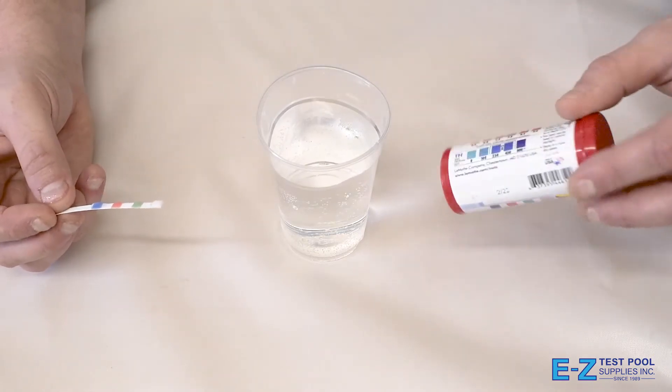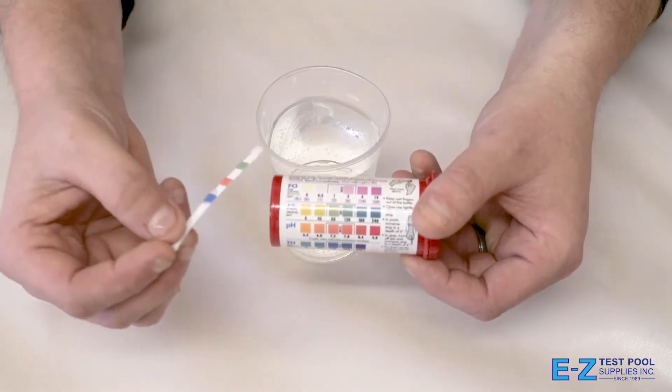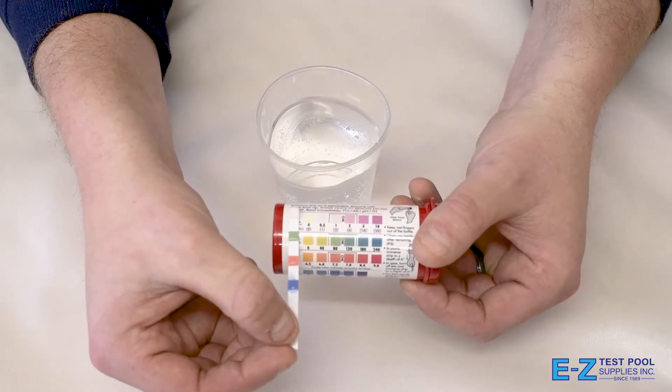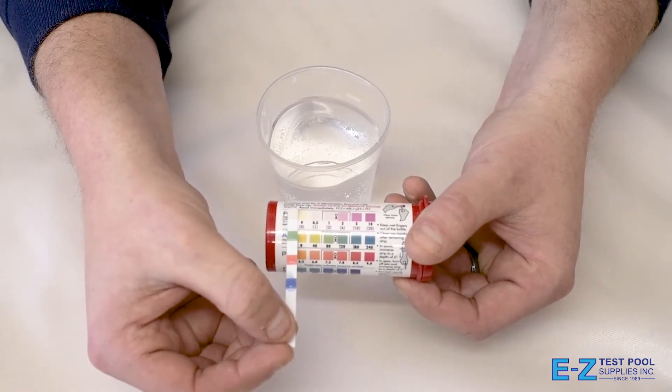Then you'll be matching up the values provided on the side of the InstaTest 4 test bottle. As we look across the levels, we notice that the free chlorine is very low.